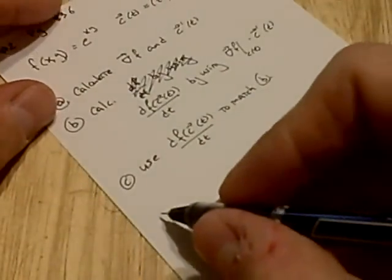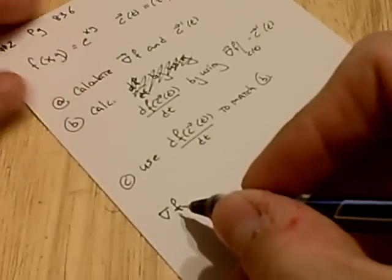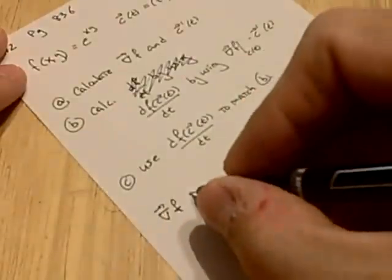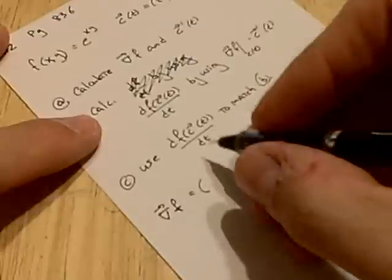First, let's calculate the gradient of the function. So the function is e to the xy. The gradient, first the partial with respect to x,